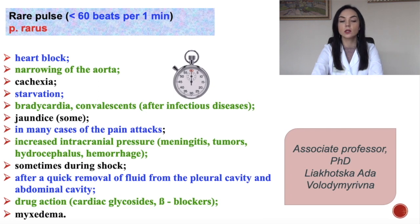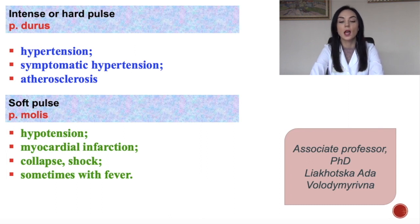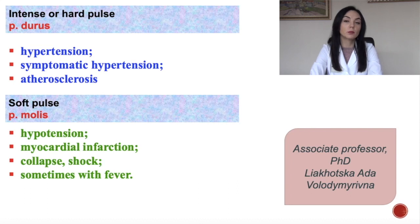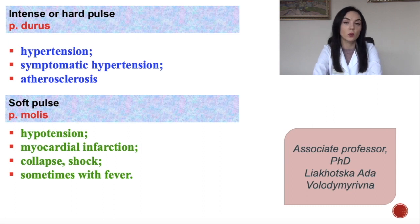Pulsus durus is an intense, hard pulse. It can occur during hypertension, symptomatic hypertension, and atherosclerosis. Soft pulse, pulsus mollis, can occur during hypotension, myocardial infarction, shock, collapse, and sometimes with fever.